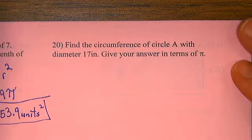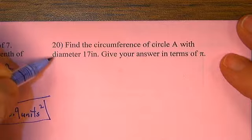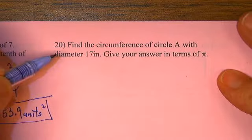Problem 28 to go. We're doing great. Find the circumference of circle A with diameter 17 inches. Give your answer in terms of pi.